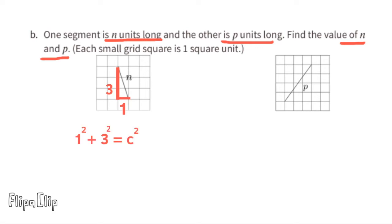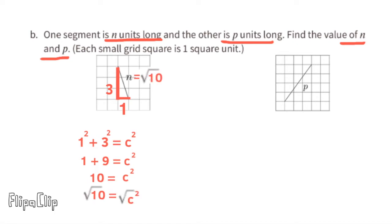Using a squared plus b squared equals c squared, we get 1 squared plus 3 squared to find c squared. One squared is 1, three squared is 9, and 1 plus 9 is 10, so c squared equals 10. The missing side length for n would be the square root of 10.